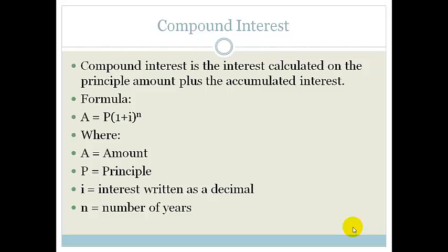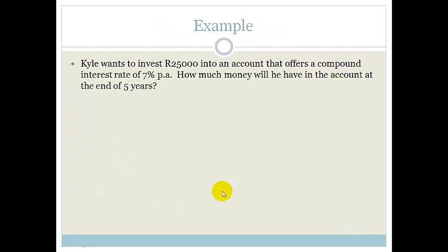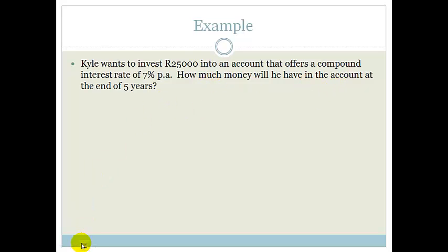So let's do an example. Kyle wants to invest R25,000 into an account that offers a compound interest rate of 7% per annum. How much money will he have in the account at the end of five years?